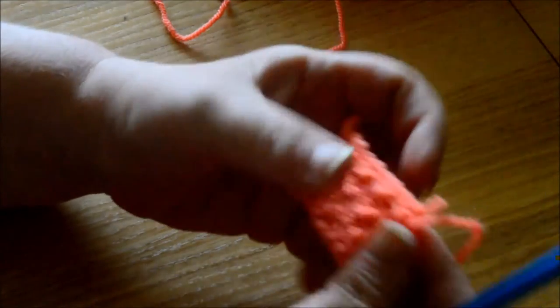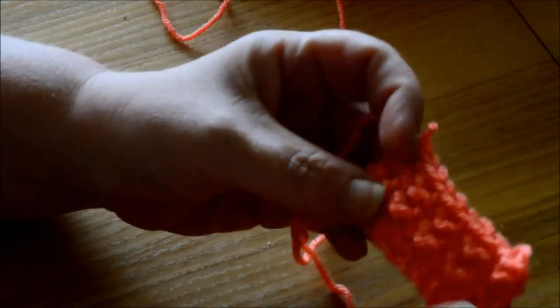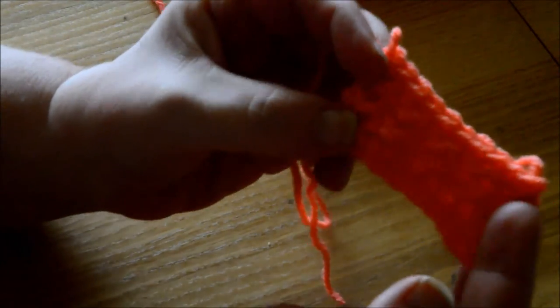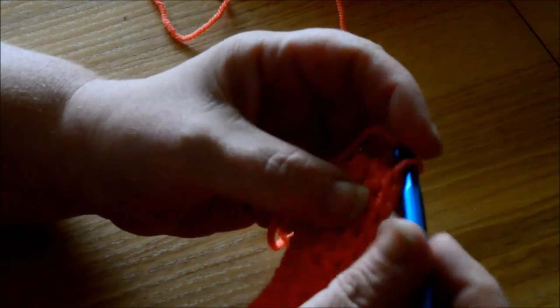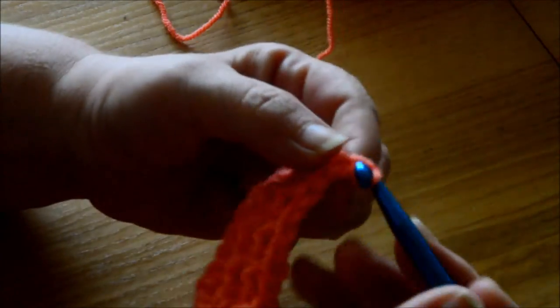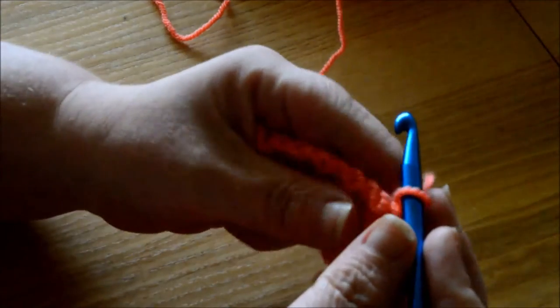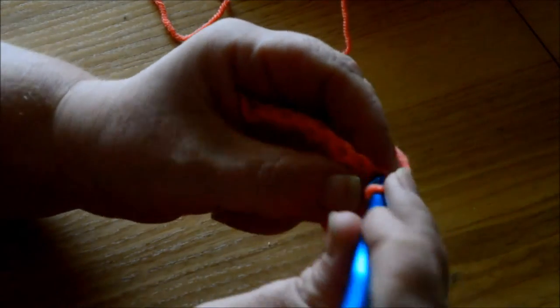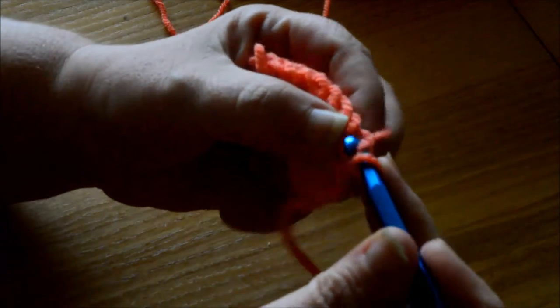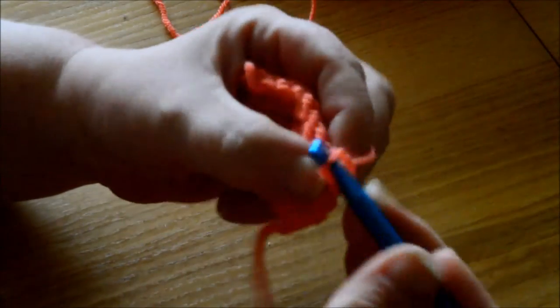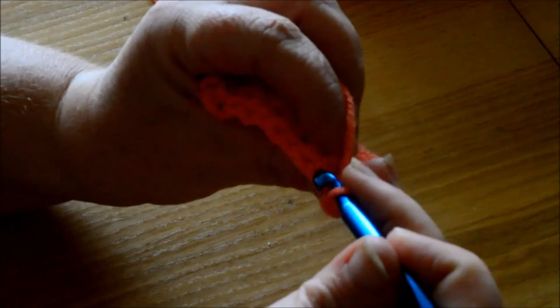I made a few rows already just to make sure how it's going to look like. Chain one, that doesn't count as a stitch. In the first one you do a slip stitch in the front loop only, in the second one...